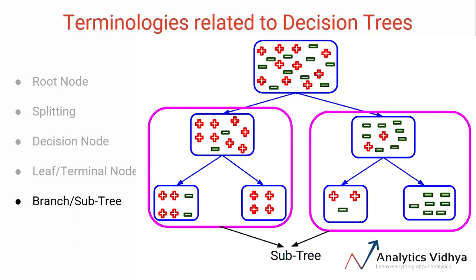A subsection of the entire tree is known as a branch or a sub-tree. So in this example, these are the two branches or sub-trees of an initial complete decision tree.